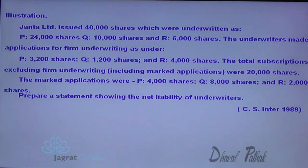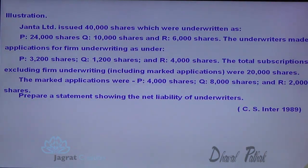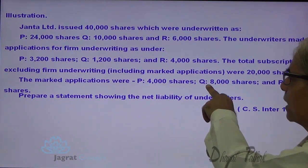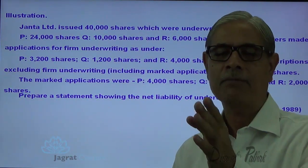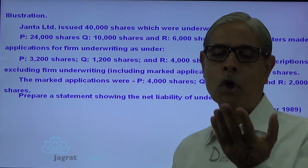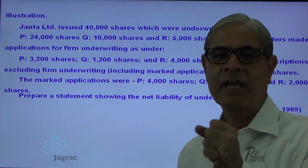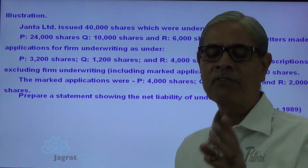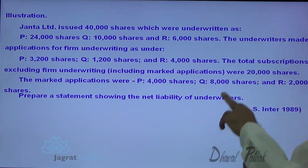The total subscription excluding firm underwriting but including marked applications was 20,000 shares. So 40,000 shares were issued to the public, and applications received were 20,000 shares including marked but excluding firm underwriting. The marked applications of P were 4,000 shares, Q 8,000 shares, and R 2,000 shares. Marked applications means applications received by the company because of the efforts of a particular underwriter — P's efforts are evident on the application form because the stamping of P is found, so it is an application received at the instance of P.